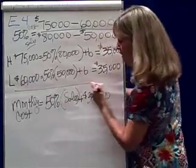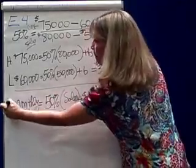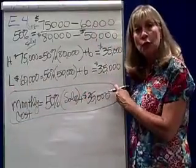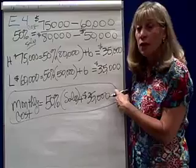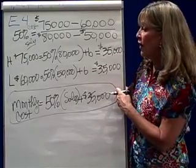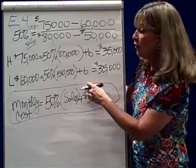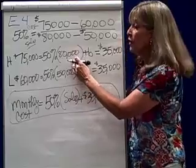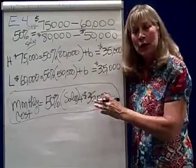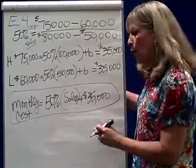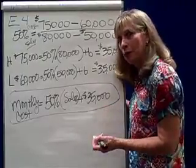So now, could I predict my monthly cost for future periods as long as I stay within sales levels of $50,000 to $80,000? In other words, the relevant range. Now, how is this useful to us? Well, I'm going to teach you about a new income statement. And this is called cost, volume, profit analysis.